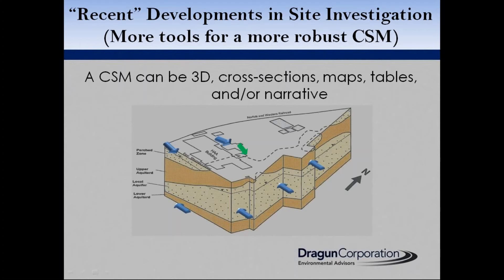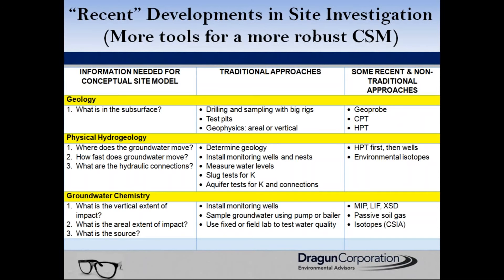A conceptual site model may look like something we have on the screen right now — a three-dimensional block diagram where you're incorporating information at the surface such as the location of tanks, piping, and building structures, and then building downward through the subsurface looking at geological and hydrogeological conditions. It may also be presented using cross-sections, maps, tables, or a descriptive narrative within a report.